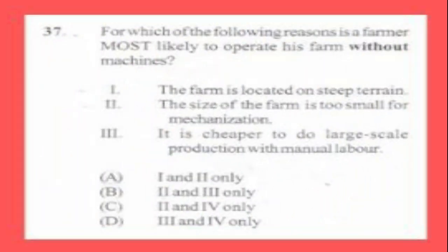Question number 37. For which of the following reasons is a farmer most likely to operate his farm without machines? 1. The farm is located on a steep terrain, 2. The size of the farm is too small for mechanization, 3. It is cheaper to do large-scale production with manual labor. A. 1 and 2 only, B. 2 and 3 only, C. 2 and 4 only, D. 3 and 4 only. The answer is A, 1 and 2 only.